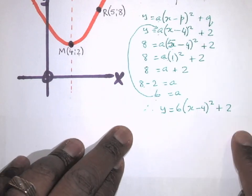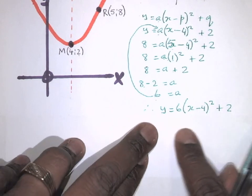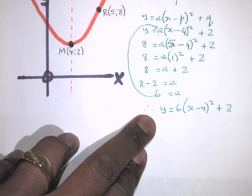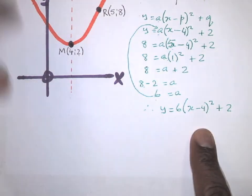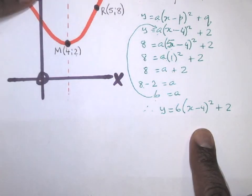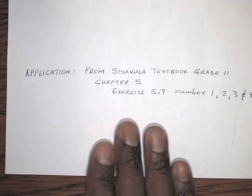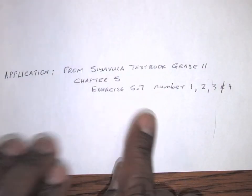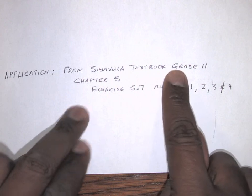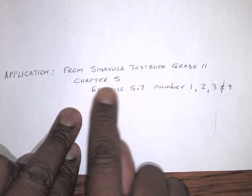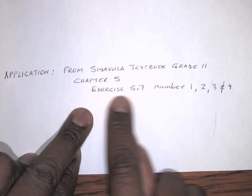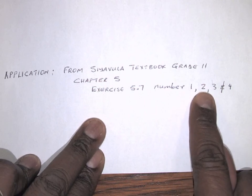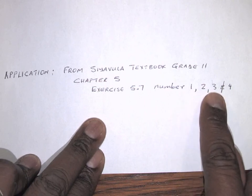You can now try a few problems from your textbook. See Avola Grade 11, Chapter 5, Exercise 5.7, numbers one, two, three, and four.